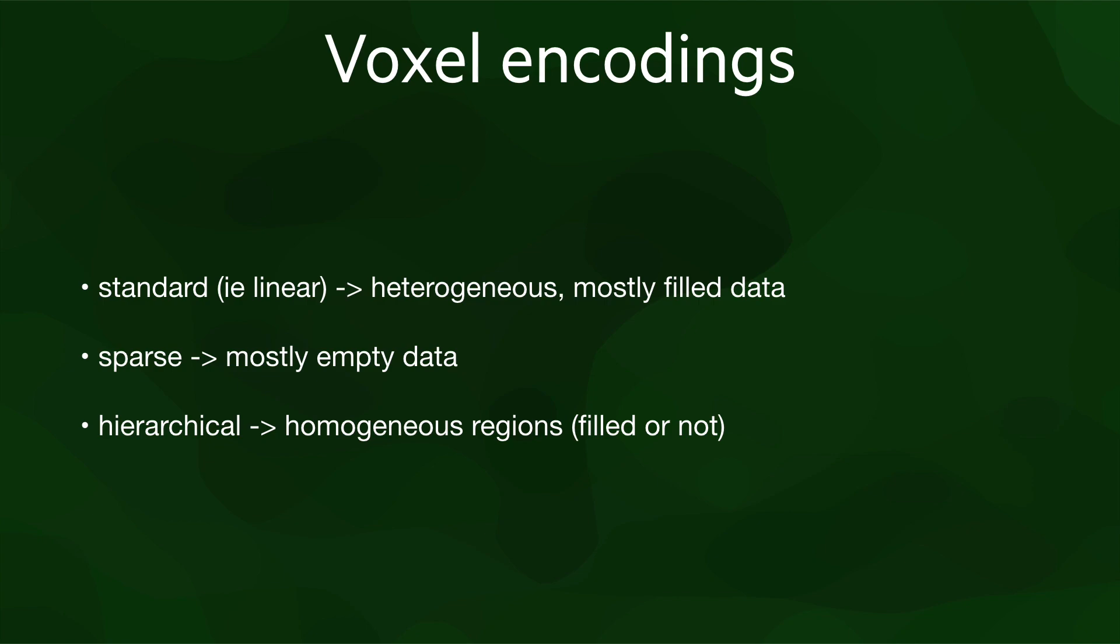Let's summarize the three encodings we have seen in this lesson and their uses. There is the standard linear encoding, which stores all the values of all the voxels as a single sequence. It's good for datasets that are mostly full and filled with data consisting of generally different values. There are sparse encodings, which store only the voxels that have values and work well when a grid is mostly empty. And there are hierarchical encodings, which aggregate regions of voxels into nodes in a tree and work best when there are large regions with the same value, which can be empty space.